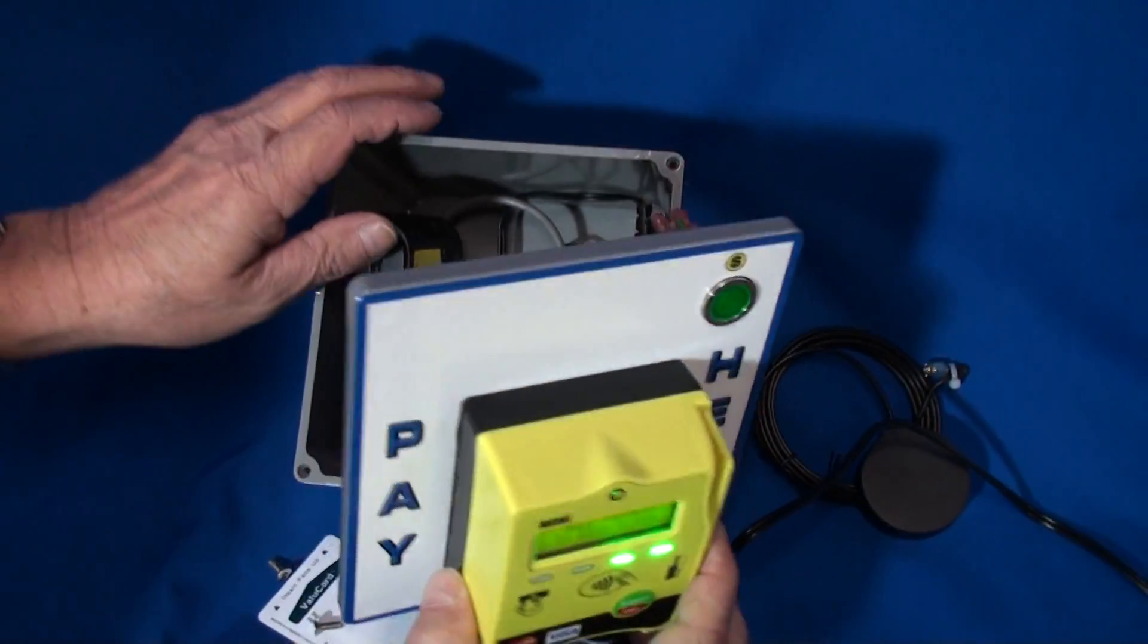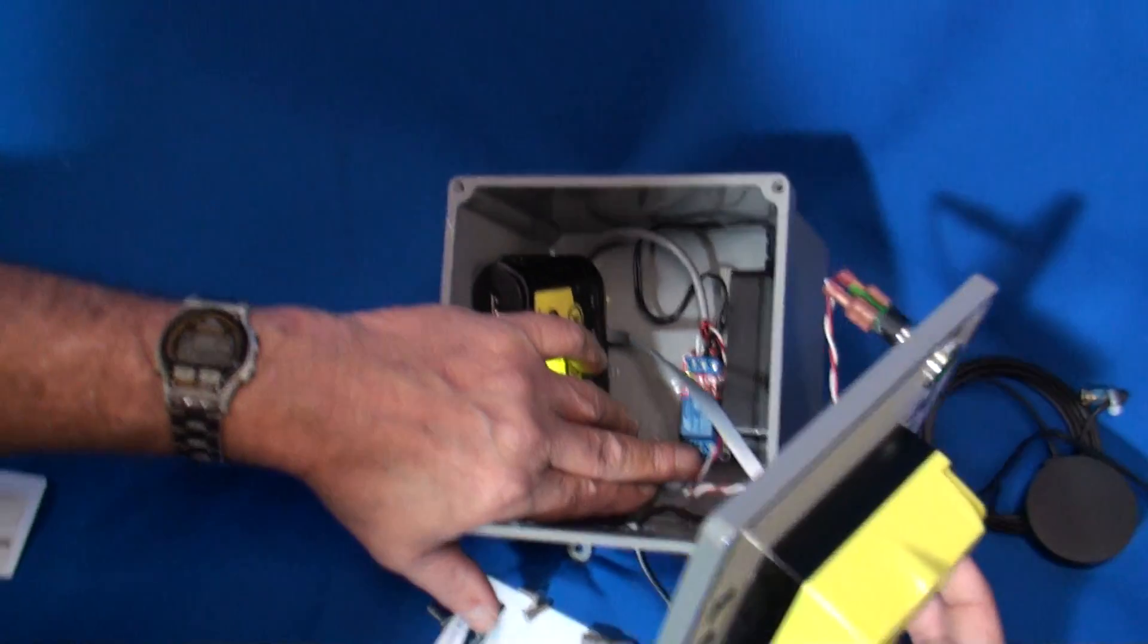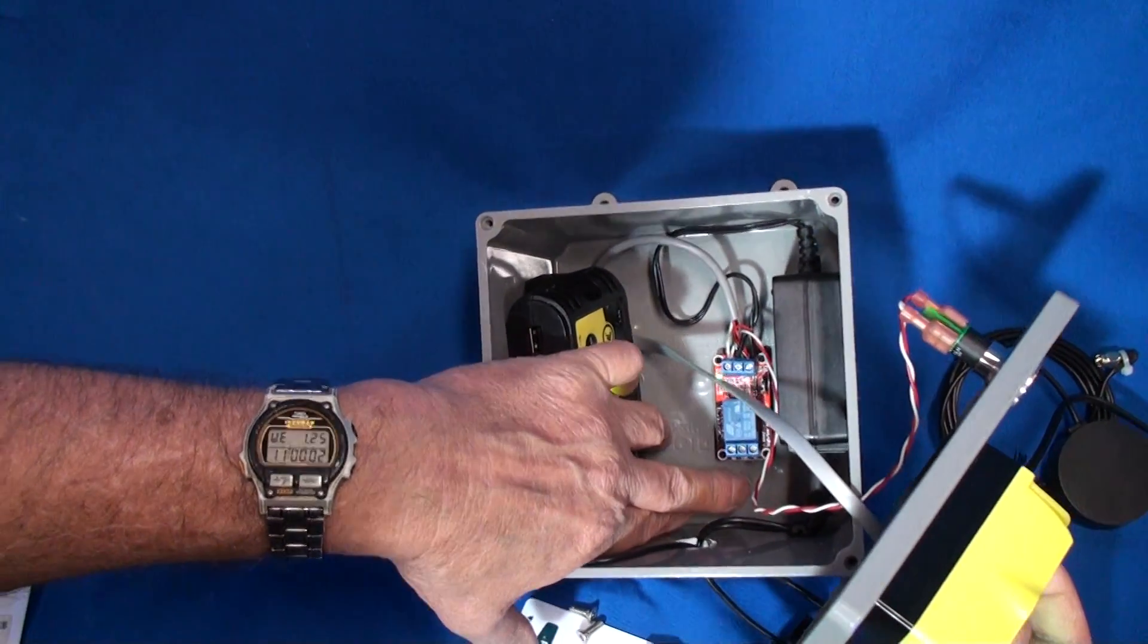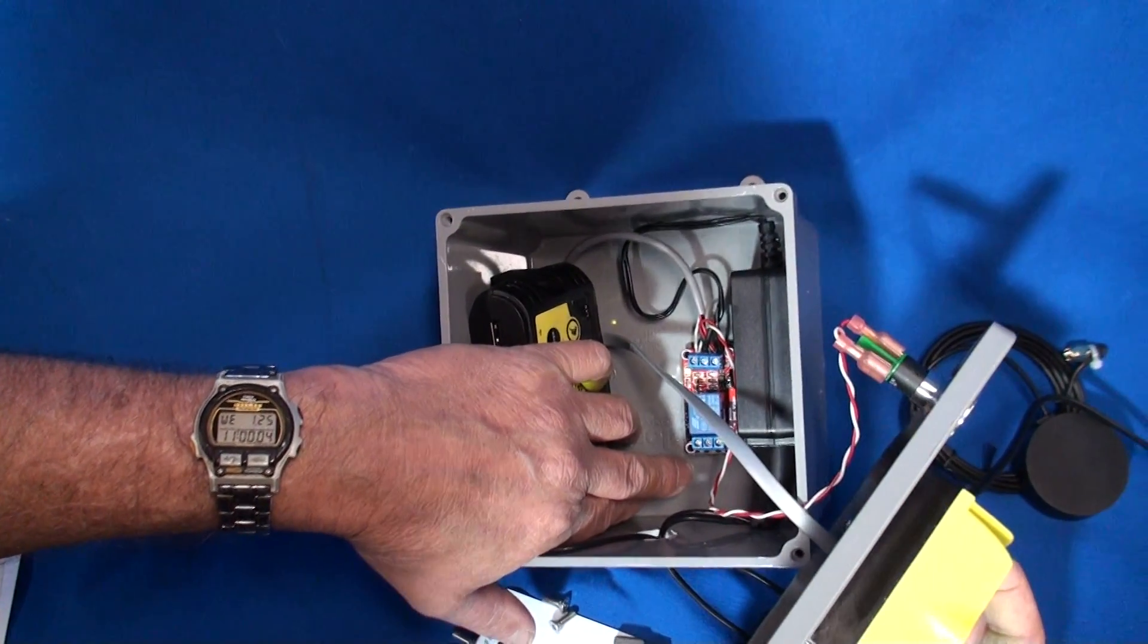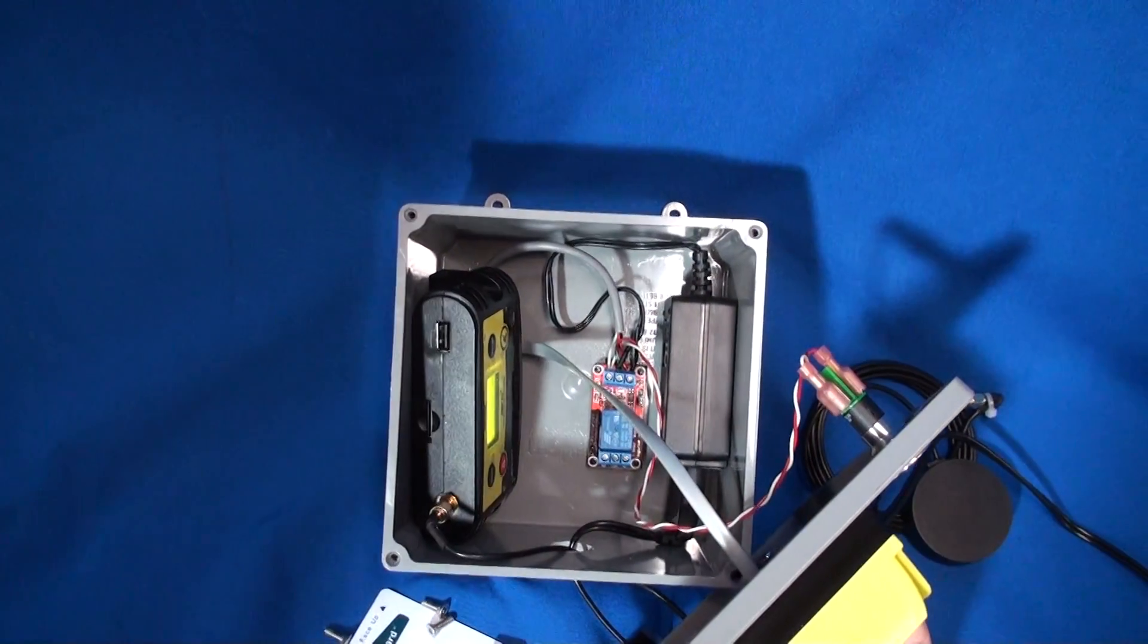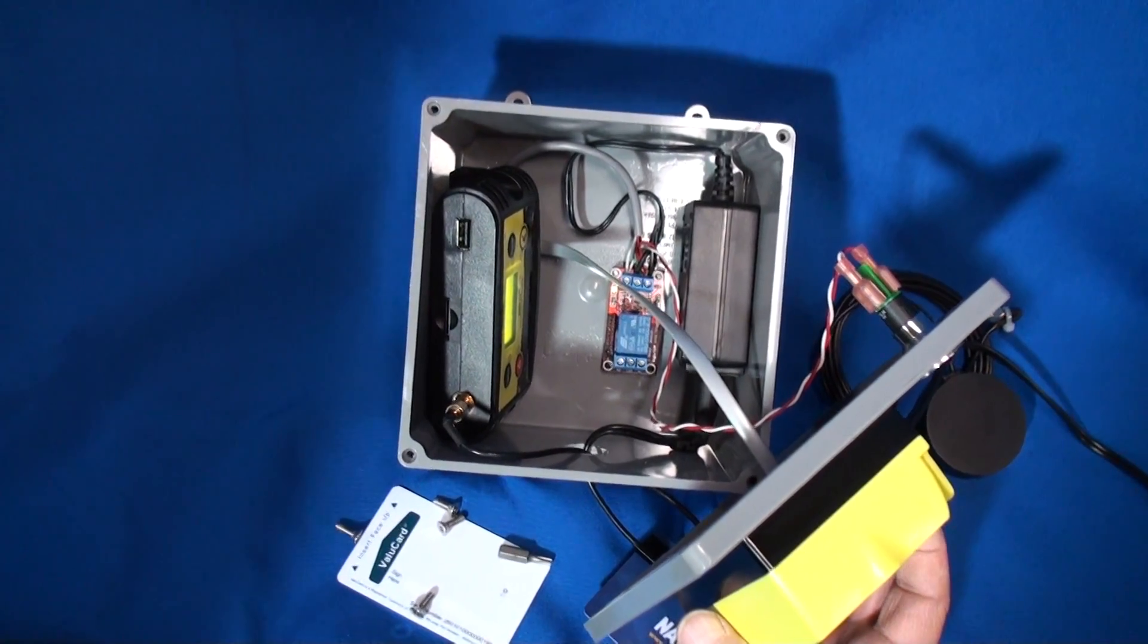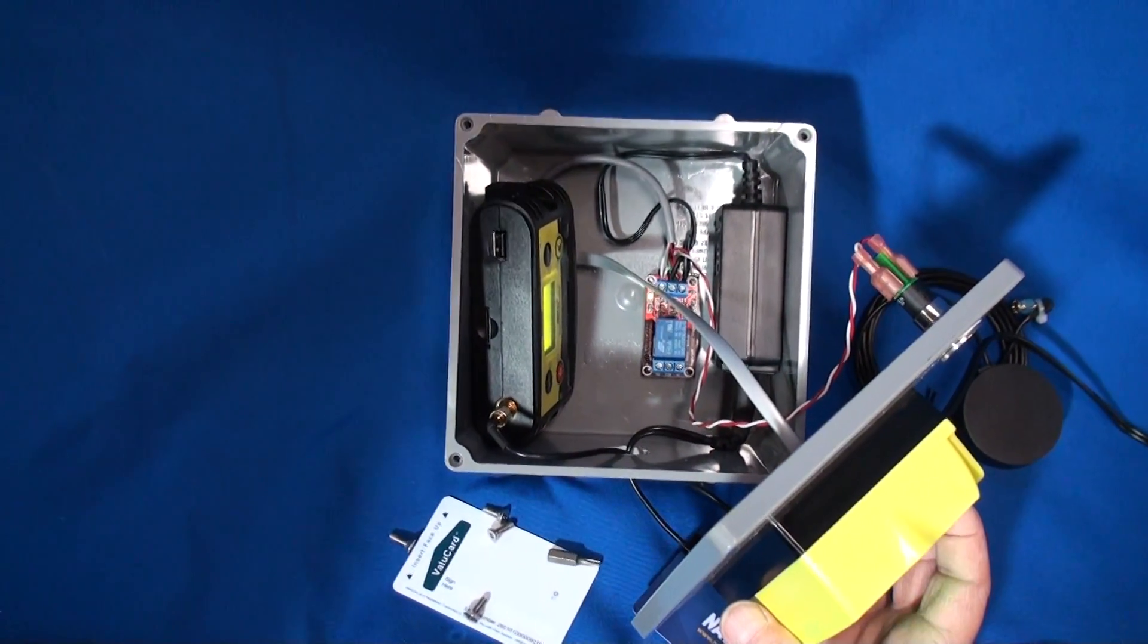In the center on the relay you have a common, and then the right side is normally closed and the left side is normally open, depending on the circuit you're looking for and whether you're looking for power, ground, whatever. You hook up to common will come out either the normally open or normally closed as you actuate the device.